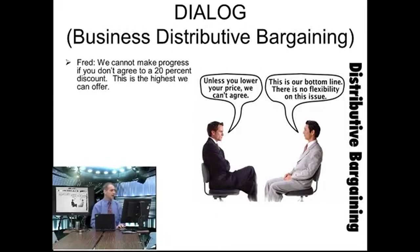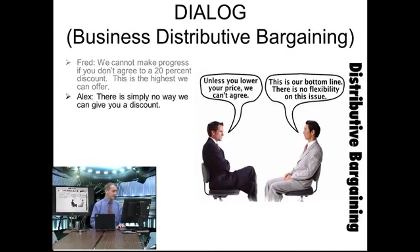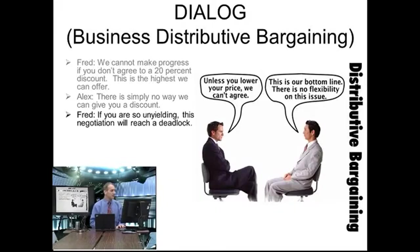Fred says: we cannot make progress — meaning we cannot come to a conclusion, we cannot finish the negotiation — if you don't agree to a 20% discount. This is the highest we can offer. Alex says: there is simply no way we can give you a discount — not only can I not give you 20%, I can't give you any discount. And Fred responds: if you are so unyielding — same as inflexible — this negotiation will reach a deadlock.